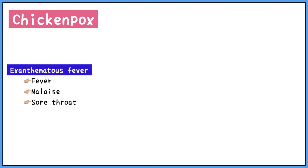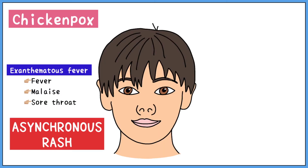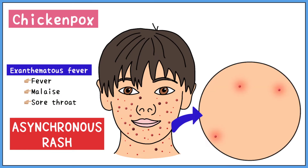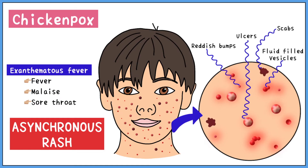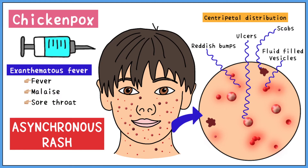It is characterized by fever, malaise, a sore throat, and most importantly, an asynchronous rash. A closer look at the rash reveals various stages of vesicle formation, ranging from small red bumps, fluid-filled vesicles, and ulcers to healing scabs — all at the same time. The lesions usually show centripetal distribution and first appear on the trunk. Compared to shingles, they are not very painful.